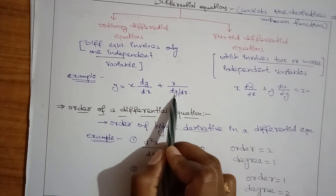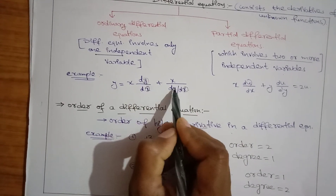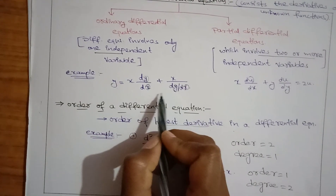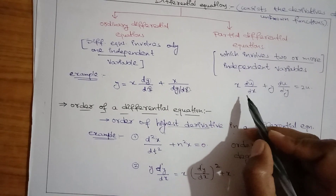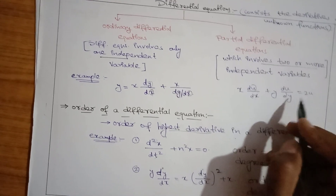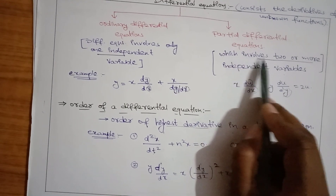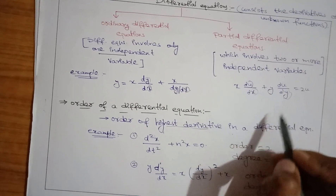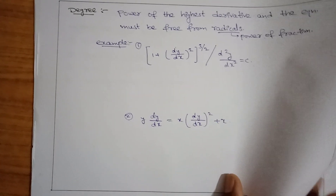Partial differential equations involve two or more independent variables. For example: y = x · (dy/dx) + x · (dy/dx) — here x is the only independent variable and y is the dependent variable, so this is an ordinary differential equation. For partial differential equations: x·(∂u/∂x) + y·(∂u/∂y) = 2u — here x and y are two independent variables, so this is a partial differential equation.